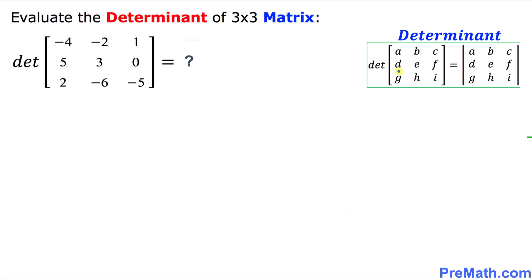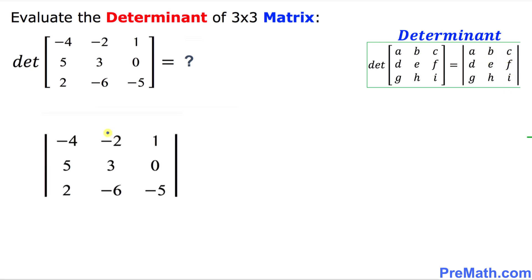The determinant of this 3x3 matrix can also be written with vertical straight lines as I showed you. I have written down this determinant of the given 3x3 matrix. The very first thing we are going to do is draw a horizontal line, and then we are going to crisscross.